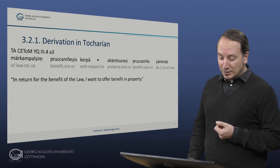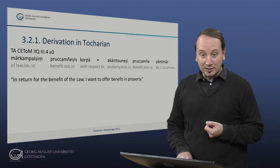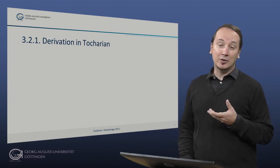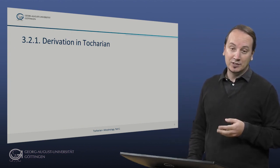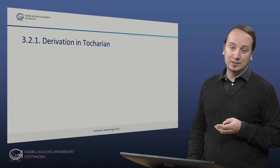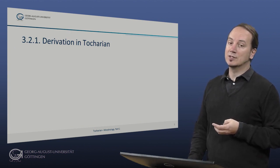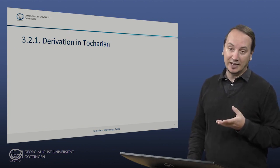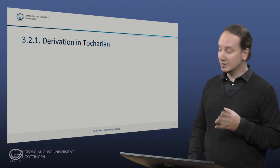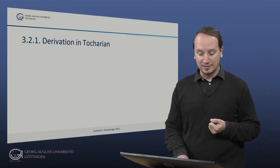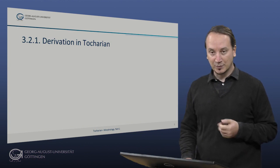The interesting thing about the Tocharian -ne and -sche adjectives and their equivalents in Tocharian A is that they can be used instead of the inflected genitive. This is, by the way, not unlike the Anatolian -sa adjectives.